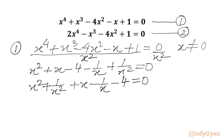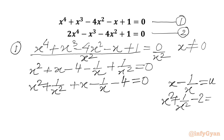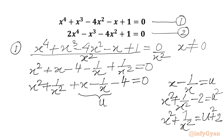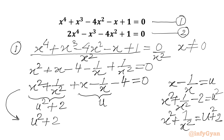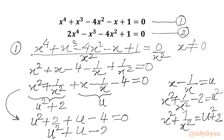Now we can use the substitution x - 1/x = u. Squaring both sides gives x² + 1/x² - 2 = u², so x² + 1/x² = u² + 2. Substituting back, our equation in u becomes: u² + 2 + u - 4 = 0, or u² + u - 2 = 0. Remember, u is x - 1/x.